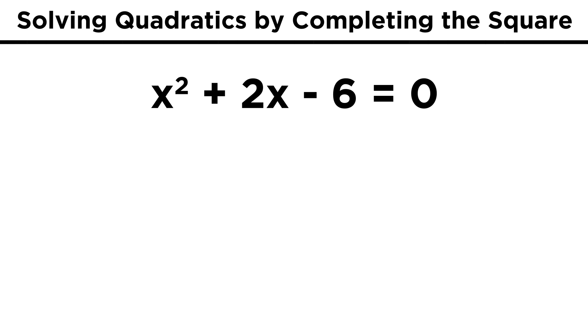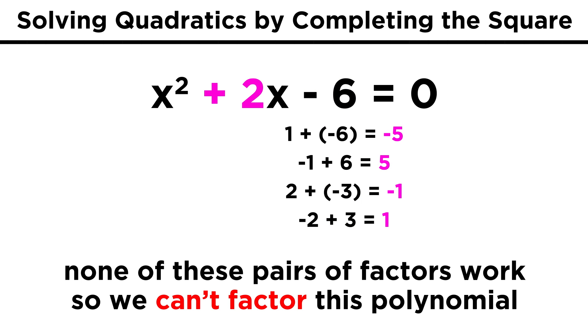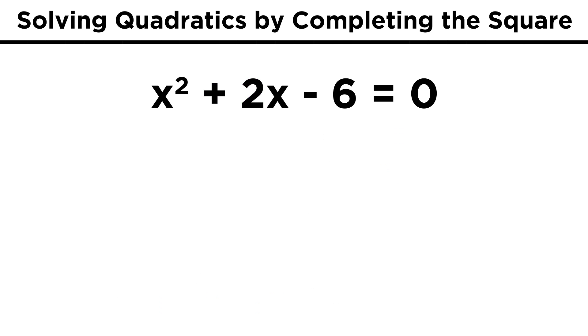Let's say we have x squared plus 2x minus 6 equals zero. If we find the factors of negative 6, which are combinations of 1 and 6 or 2 and 3, we find that there is no way to add any pair of factors together to get positive 2. So we can't factor this polynomial. But let's do a little trick. Let's add 6 to both sides, bringing the 6 to the other side.